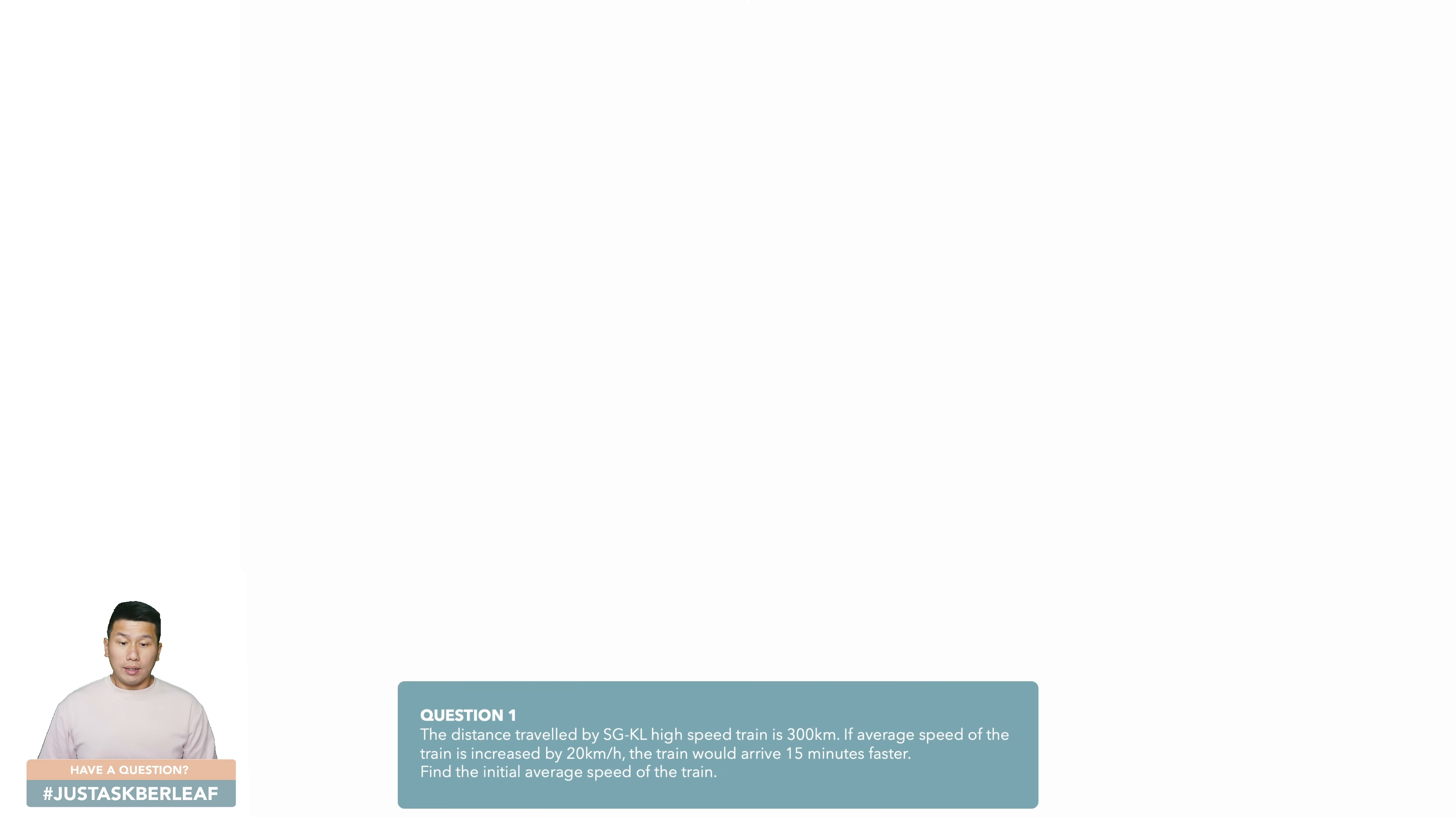Let's proceed to the first question. The distance traveled by Singapore KL high-speed train is 300 km. If average speed of the train is increased by 20 km per hour, the train would arrive 15 minutes faster. Find the initial average speed of the train. For this, I will apply the first method.